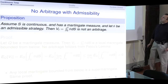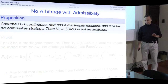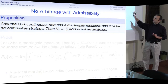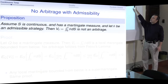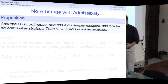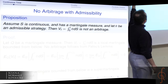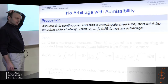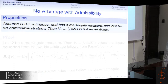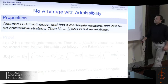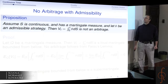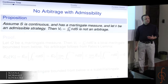Now the proposition we prove: if we have a continuous process with a martingale measure, and theta is an admissible strategy in the previous sense — so it is integrable and the integral is bounded from below — then the integral cannot be an arbitrage. This is basically the result we need for the well-posedness of the continuous time finance strategies we want to consider.